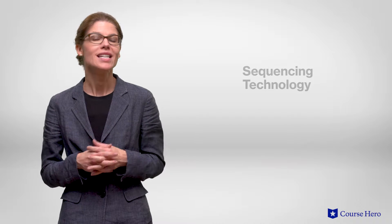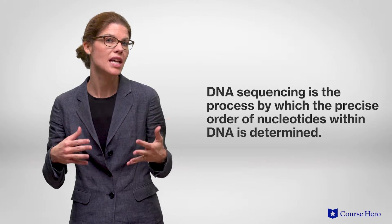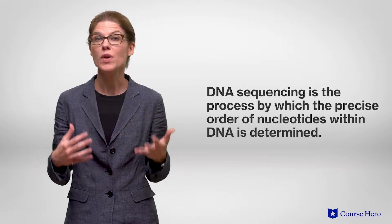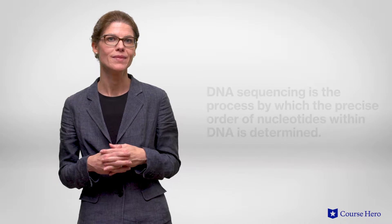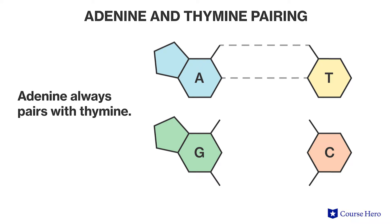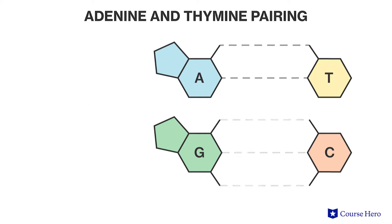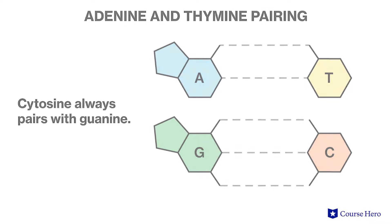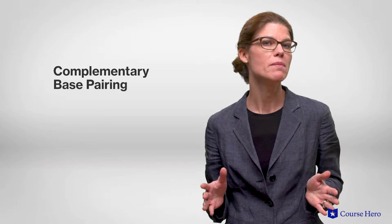Advances in DNA technology have rapidly emerged since the structure of DNA was discovered in 1953. One of the most important advances made has been in the area of sequencing technology. DNA sequencing is the process by which the precise order of nucleotides within DNA is determined. Nucleotide bases pair according to specific rules: adenine always pairs with thymine in DNA, or uracil in RNA, and cytosine always pairs with guanine. This is called complementary base pairing.